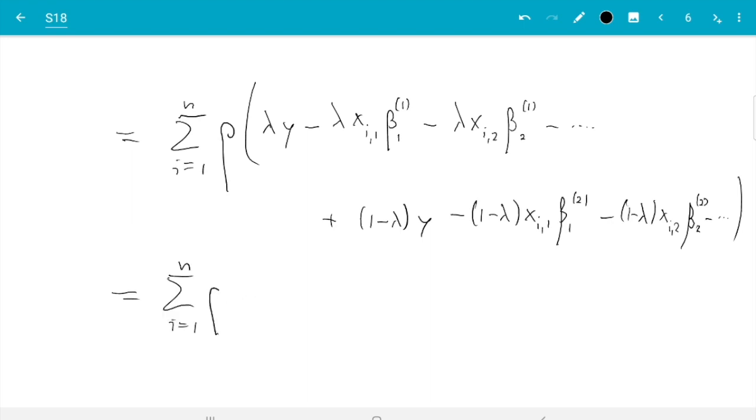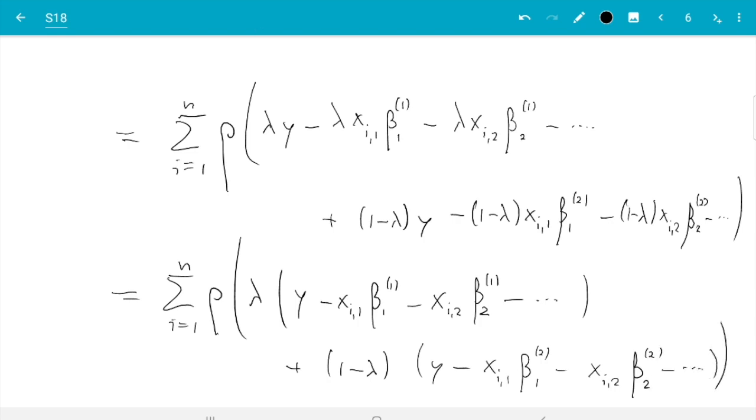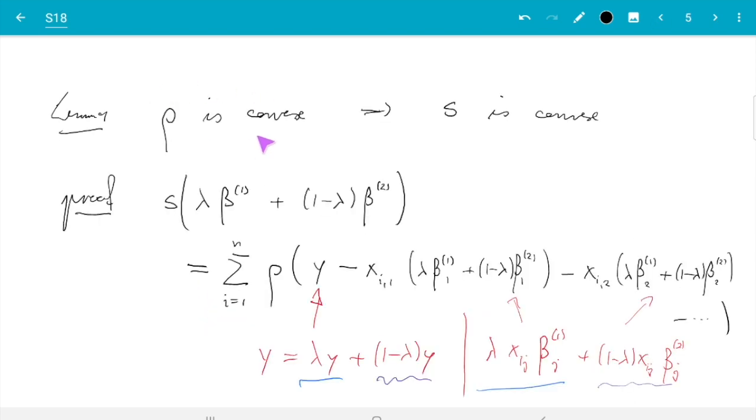And I think you see probably already what I'm setting up here. I can now take out the lambdas so I do sum i from 1 to n, rho lambda and then I do Y minus X i 1 beta 1 1 minus X i 2 beta 1 2 and so on. Plus 1 minus lambda Y minus X i 1 beta 2 first component minus X i 2 beta 2 second component and so on. And now finally I can use the property that rho is convex. That is true by assumption.